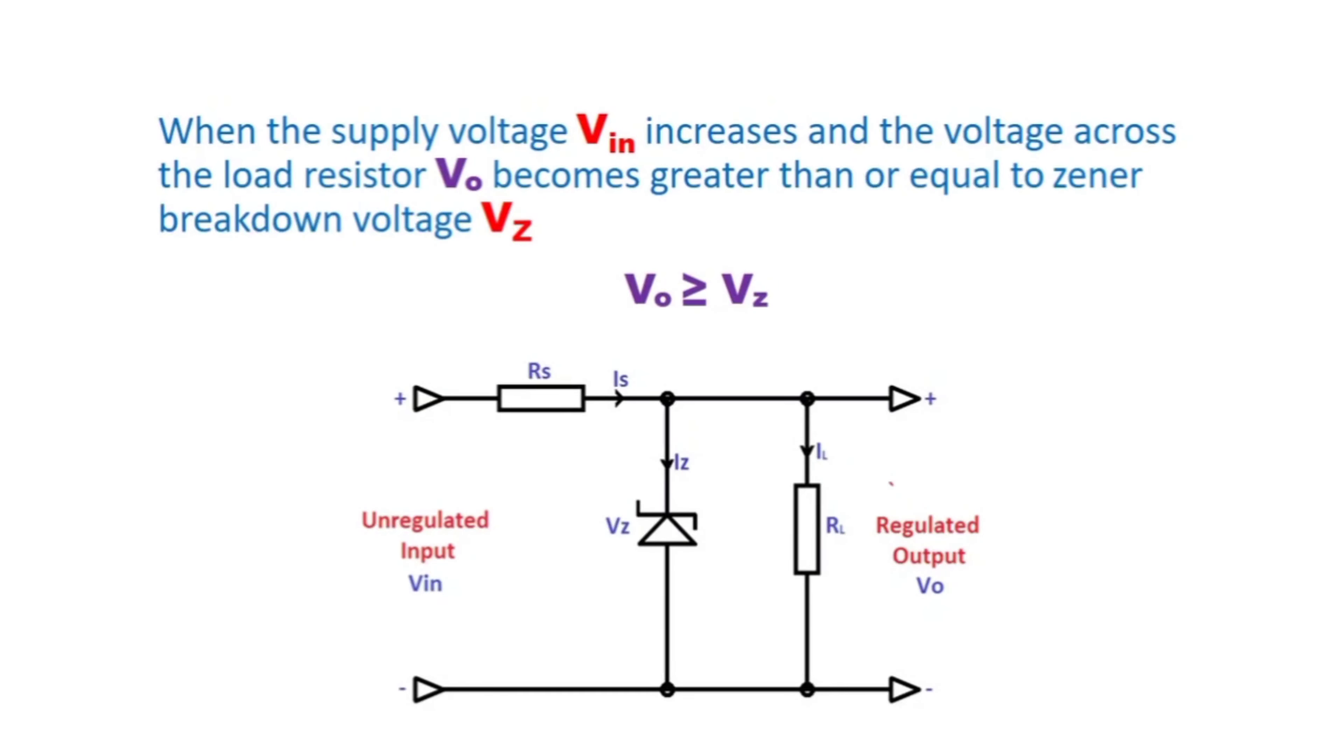For example, if the supply voltage V input increases, what is the use of Zener diode? To maintain voltage regulation, constant voltage across load. When the supply voltage V input increases, the voltage across the load resistor V0 becomes greater than or equal to Zener breakdown voltage VZ. That is third mode of operation of Zener diode when used as voltage regulator, V0 is greater than or equal to VZ.